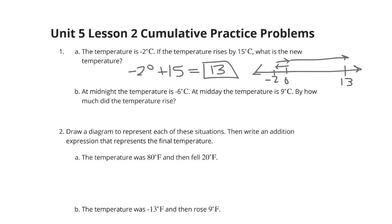At midnight, the temperature is -6°C. At midday, the temperature is 9°C. By how much did the temperature rise? We're basically asking ourselves, -6 plus what is going to equal 9?